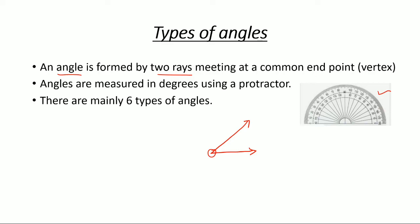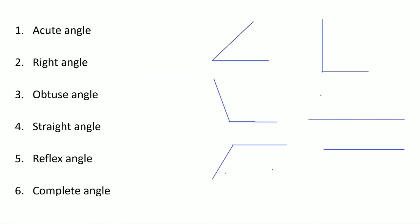There are mainly six types of angles. The first is the acute angle. An acute angle always lies between zero degrees and 90 degrees — so if my angle is A, then angle A is greater than zero degrees and less than 90 degrees.